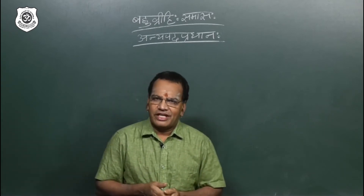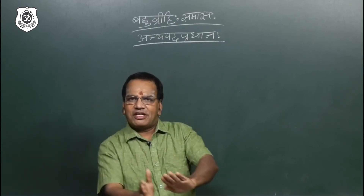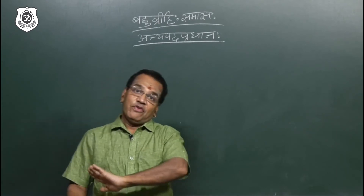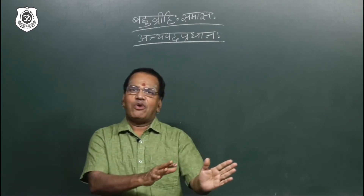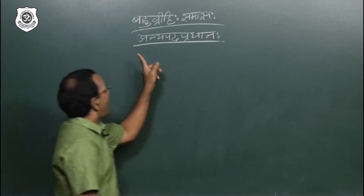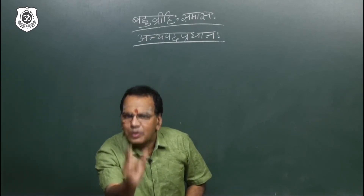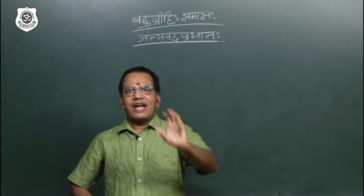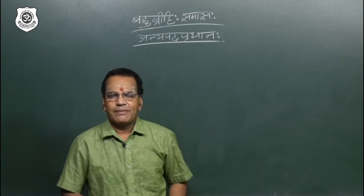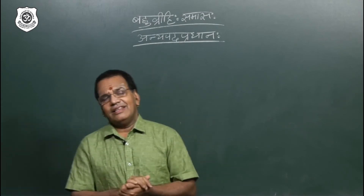In Sanskrit, Dashanana means ten-headed. When you say ten-headed, we are not concentrating on the ten heads themselves — we are jumping to that particular noun who is called Ravana. That is called Bahuvrihi. Therefore, anyapada pradhanah: through this compound word you are going to understand some different meaning — that is Bahuvrihi.